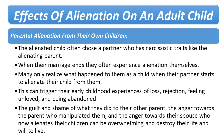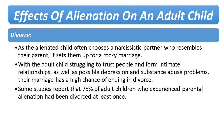The guilt and shame of what they did to their other parent, the anger towards the parent who manipulated them, and the anger towards their spouse who now alienates their children can be overwhelming and destroy their life and will to live. Divorce. As the alienated child often chooses a narcissistic partner, it sets them up for a rocky marriage. With trust issues, depression, and possible substance abuse problems, their marriage has a high chance of ending in divorce. Some studies on adult children who experienced parental alienation reported that 75 percent of participants had been divorced at least once.